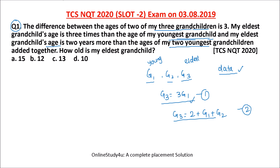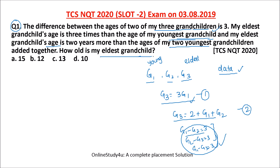One more condition: the difference between the ages of 2 of my grandchildren is 3. So either G1 − G2 = 3, or G2 − G3 = 3. We do not know which pair has a difference of 3, so we keep that aside for now. The question asks: how old is the youngest grandchild?